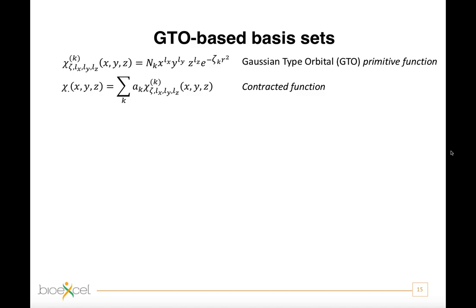The first choice is about the type of basis function to consider. We mentioned before the Slater function, in principle very suitable as a basis function because they are very similar to the orbital solution of the Schrödinger equation for an atom.